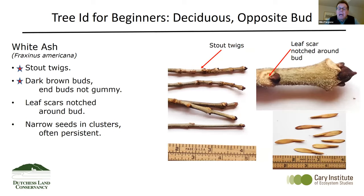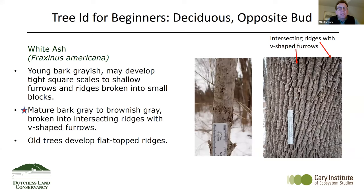Unfortunately, now emerald ash borer — another one of those forest pests we've been talking about — is beginning to eliminate all the ash in our forests, and unless some resistant individuals are found, we may lose ash as well. Up close, white ash has stout twigs and dark brown buds at the end — the buds aren't gummy as they would be with a horse chestnut. The leaf scars are notched around the bud. The mature bark of white ash is gray to brownish gray, with broken intersecting ridges and B-shaped furrows, and the older trees develop flat tops to those ridges. Ash can be told apart from other species quite easily by that furrowed bark.